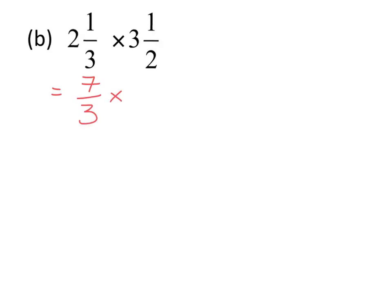Multiplied by 3 and a half: 3 times 2 gives us 6, add the 1 on top gives us 7 over 2. When multiplying fractions there is no need for the denominators to be the same, so we simply multiply top by top — 7 times 7 is 49 — and bottom by bottom — 3 times 2 is 6.